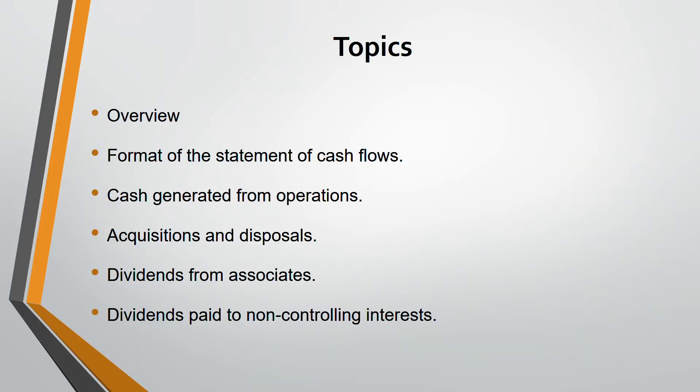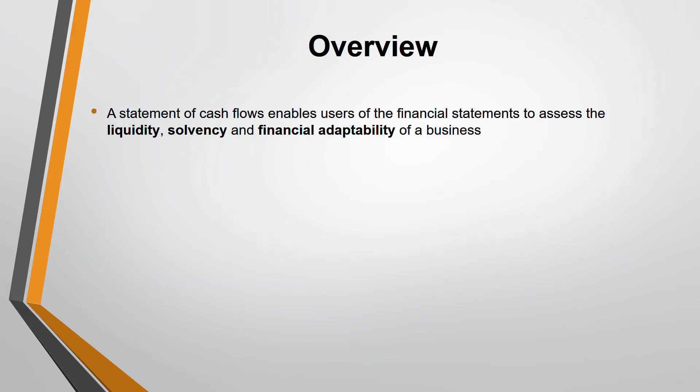Let's start with the overview of IAS 7. You should know the format of the statement of cash flows. Cash generated from operations is very important. Investing and financing activities are also important, but cash generated from operations is particularly key because we have different methods of calculating it - direct versus indirect. Acquisition and disposal is related to group accounting, not individual. When you acquire or dispose of a subsidiary, what is the impact on the statement of cash flows? Also dividends from associates and dividends paid to NCI.